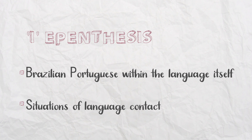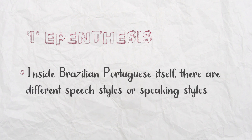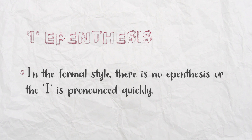E epenthesis is a serious thing in Brazilian Portuguese. It's within the language itself and also shows itself in situations of language contact. Inside Brazilian Portuguese itself there are different speech styles, and sometimes those styles are distinguished based on whether you epenthesize an E or not, or how pronounced your E is. In formal styles of Portuguese, there is no E epenthesis, or the E that is epenthesized is pronounced much more quickly — a very short version.